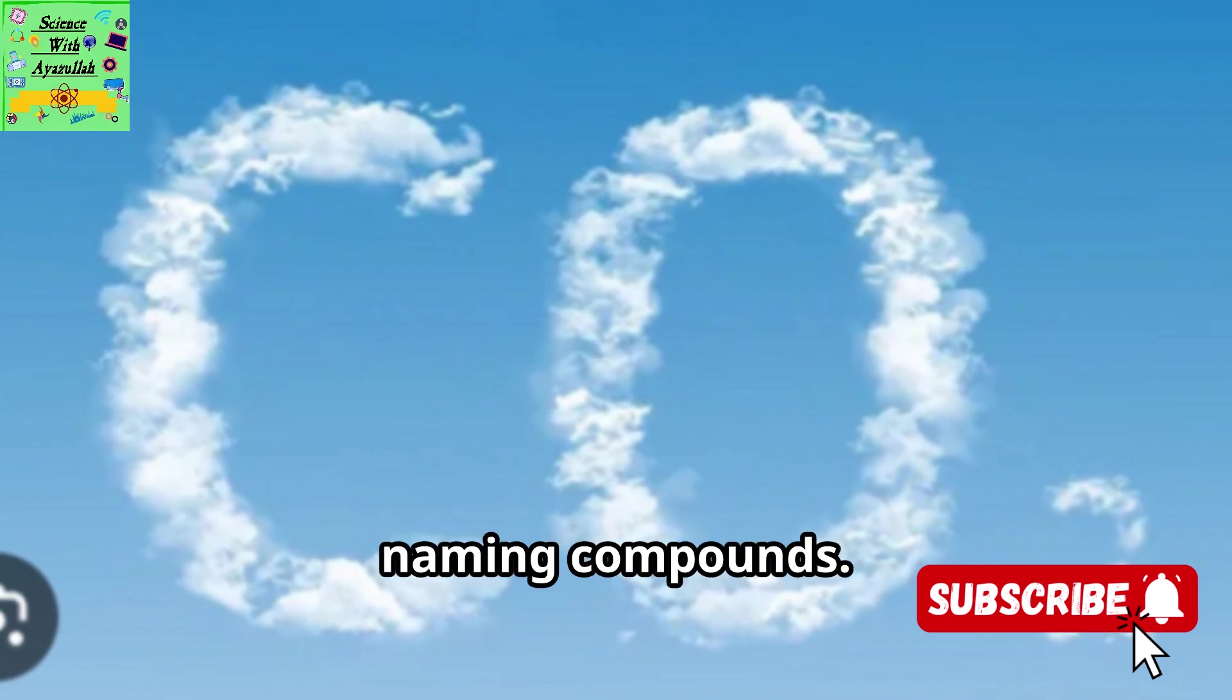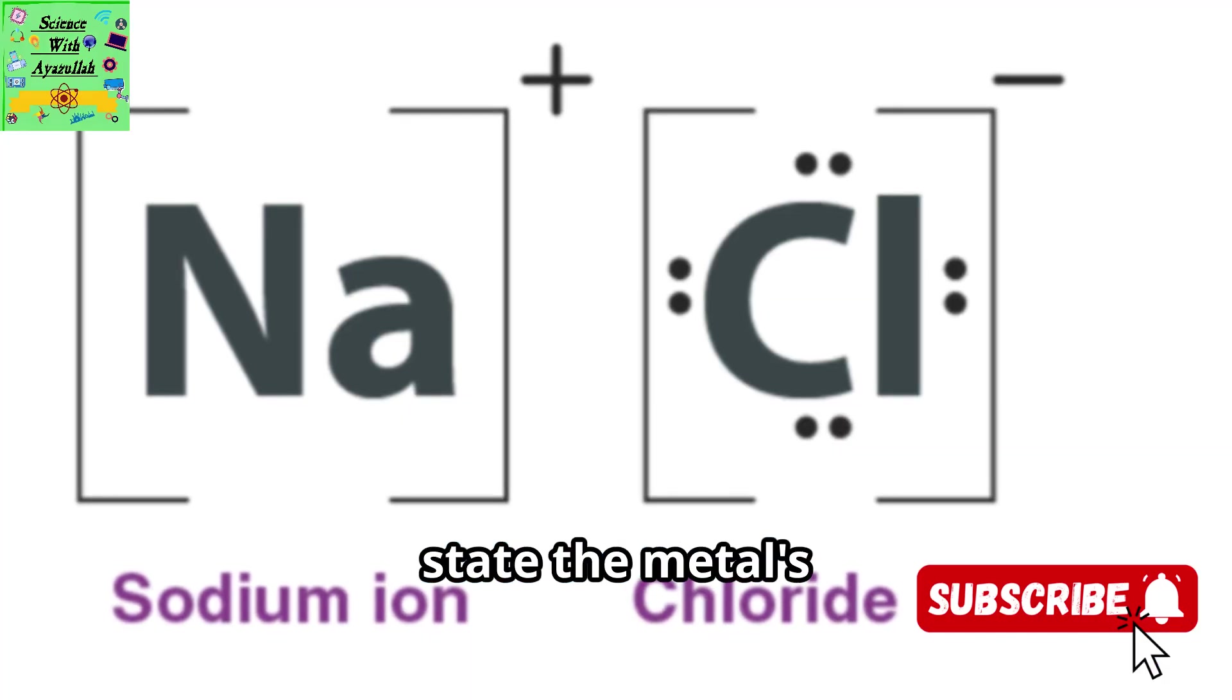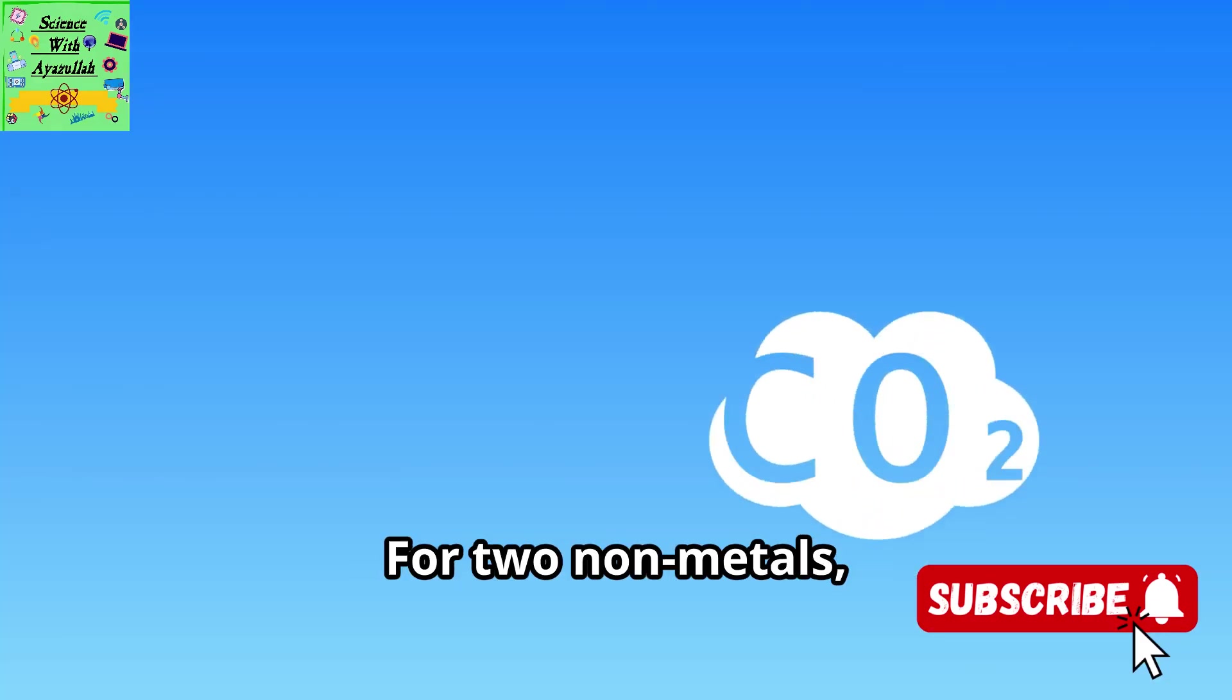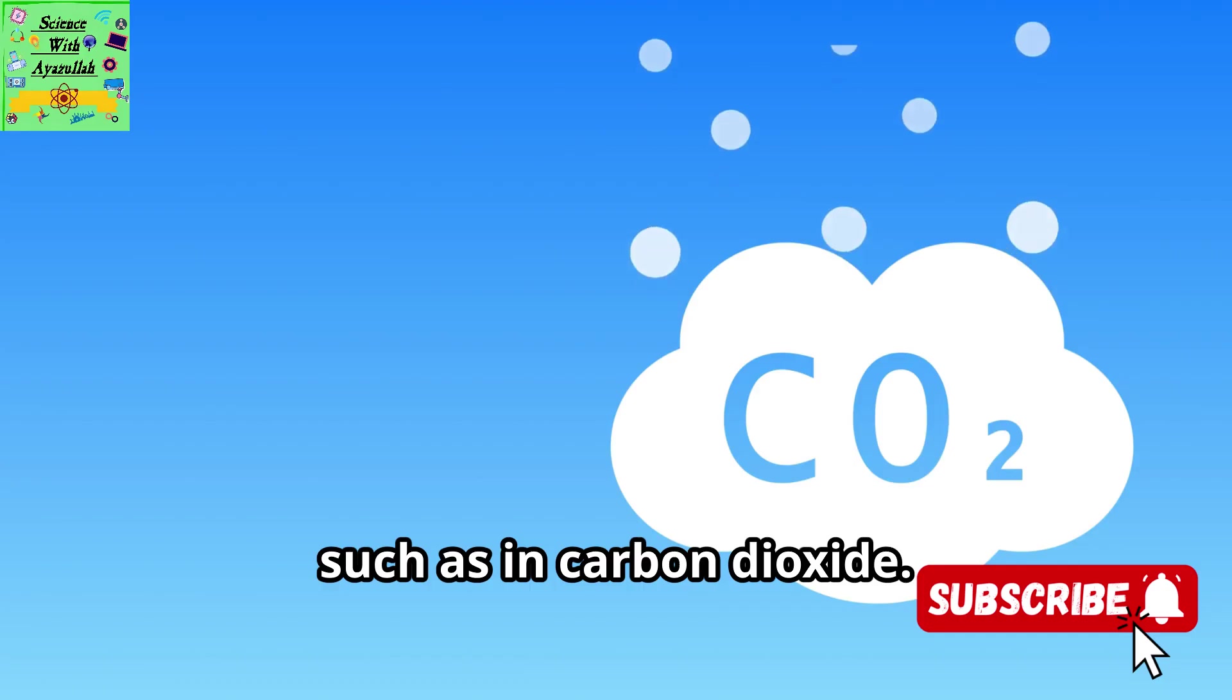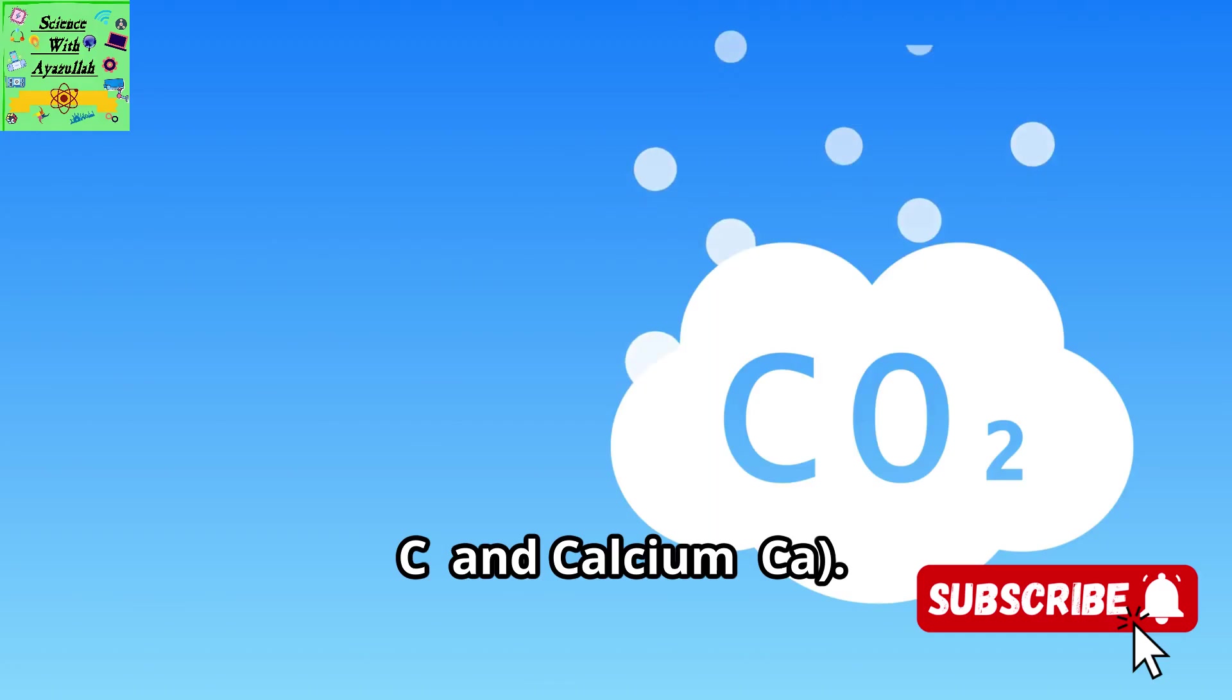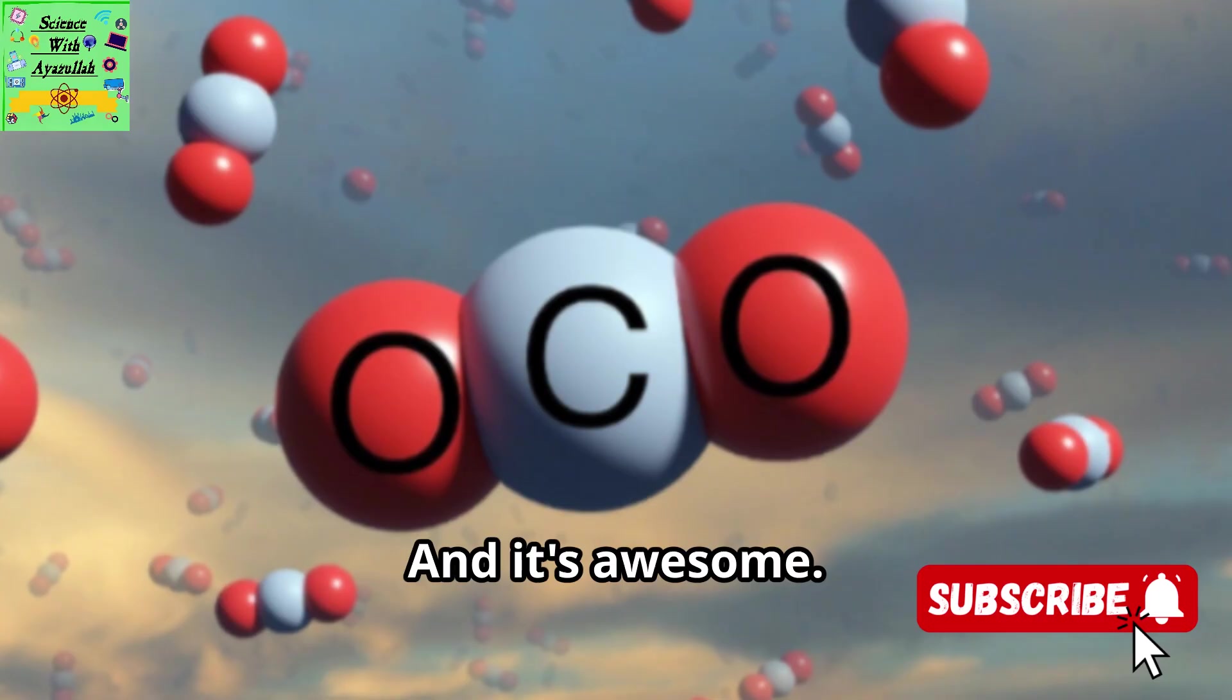So, let's review our master plan for naming compounds. First, identify if you have a metal and a non-metal or two non-metals. For a metal and a non-metal, state the metal's name and change the non-metal's ending to IDE, like in sodium chloride. For two non-metals use prefixes like mono and di to indicate the number of atoms of each element such as in carbon dioxide. Always read chemical symbols carefully to avoid mix-ups between elements like carbon and calcium. By following these rules, you can decode the language of chemistry and understand the ingredients that build our world. It's not magic, it's science, and it's awesome.